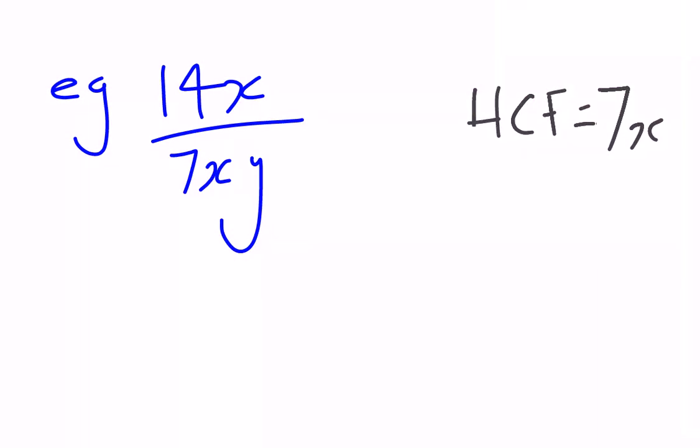7x times 2 up the top would get us 14x. 7x times y on the bottom would get us 7xy. So we cancel out that common factor. Our x's cancel out. I'm left with 2 here and 1 here. 2 on the top, 1y on the bottom, and of course when our coefficient is 1, we don't write it, so I've got 2 over y.